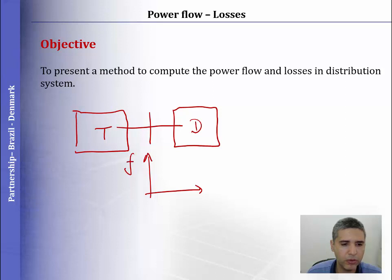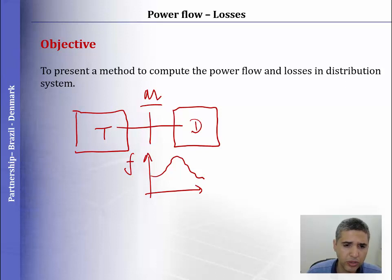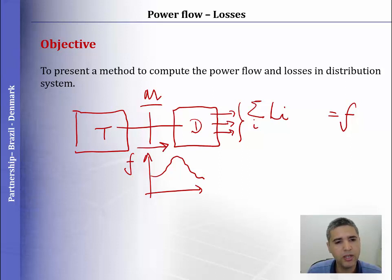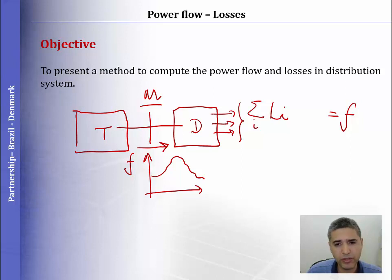We talked about the power flow at the frontier of the distribution system, and based on this power flow we will define the best contract. Imagine that we have loads in the distribution system and the sum of these loads could represent the power flow, because the power flow through the border of the system will be used to feed the loads. But apart from the loads in the distribution system, we also have the losses.